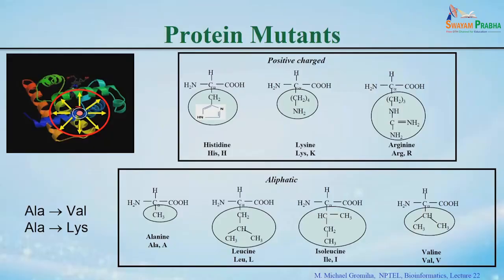Here you see there is a central residue. If you mutate this particular residue with any other residue, currently this residue is making contacts with other residues in the protein. If you mutate this residue it may lose the contact or may make additional contacts, depending upon the type of mutations.